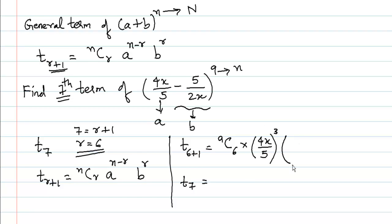Then b raised to r, where b is -5/2x, raised to r. Now the value of r is 6.